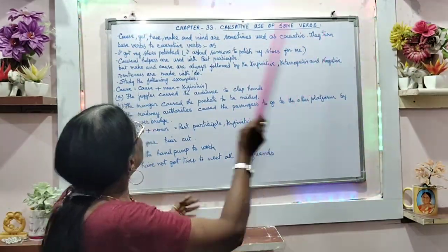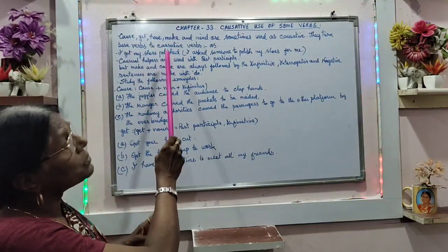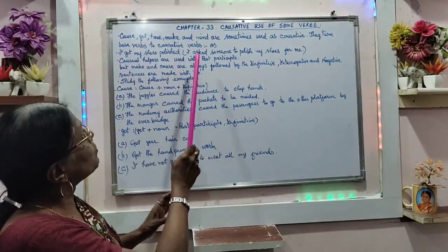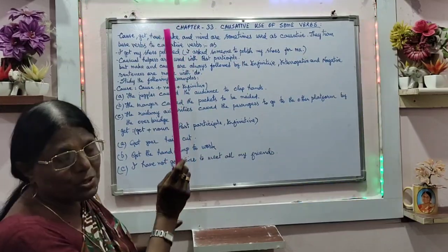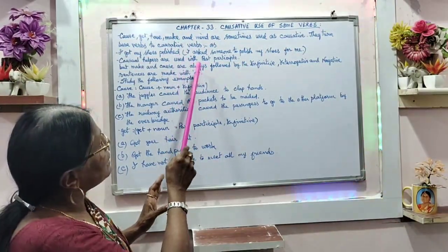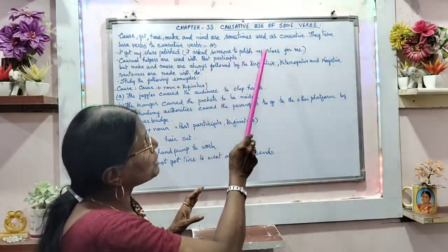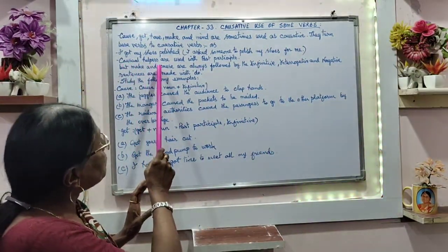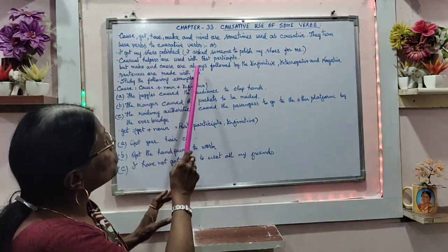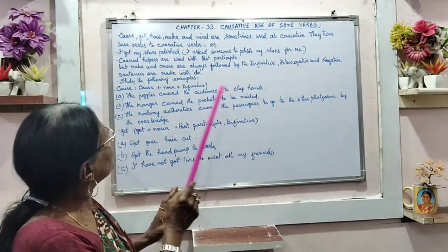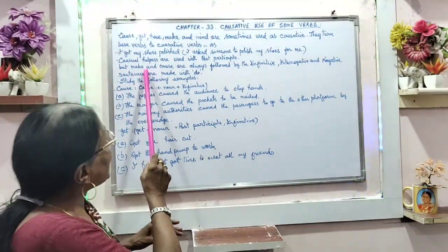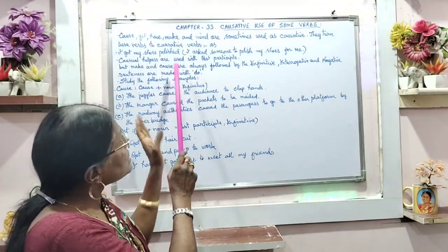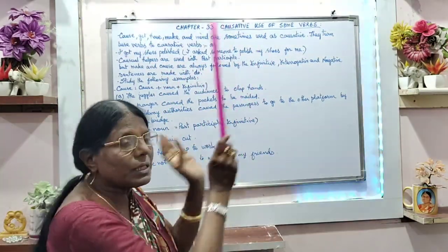They turn base verbs to causative verbs. For example: 'I got my shoes polished' — this means I asked someone to polish my shoes for me. Causative helpers are used with past participle. But make and cause, these two are always followed by infinitive.